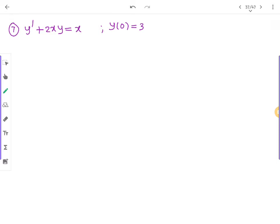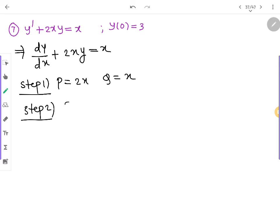Then the last question of today's session, which is 7. dy by dx plus 2xy equal to x. Now here it's very simple. So step 1, P is equal to 2x, Q is equal to x. Step 2, integrating factor is e raise to integration P dx. So e raise to 2x dx, which becomes e raise to x square.